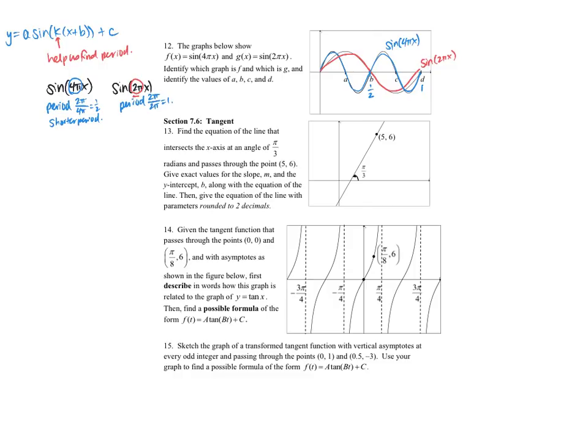And then the value of b and d I already labeled there. The value of a is going to be halfway between 0 and one half, which is one fourth. And the value of c is going to be halfway between one half and 1, which is three fourths.